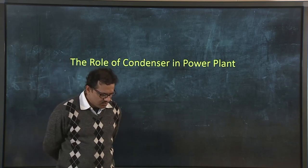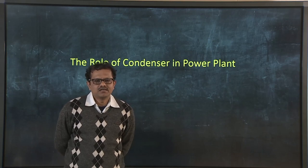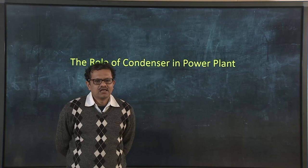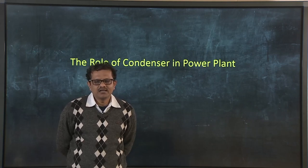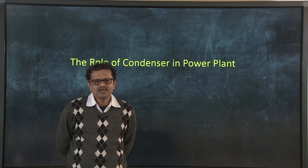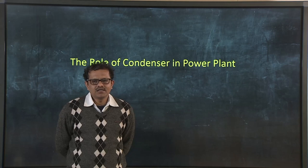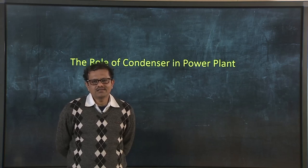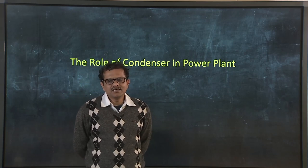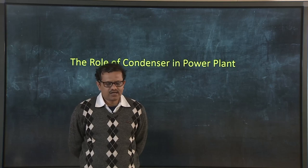We have discussed about the boiler, which is an essential component in a steam power plant to produce or generate steam. Steam produced in the boiler is taken to the turbine, and while steam flows through the turbine it does work on the rotating part of the turbine and we get work output. After doing some work, that steam is again taken to the condenser, where steam releases heat and gets condensed into water, and that water is recycled back to the boiler.